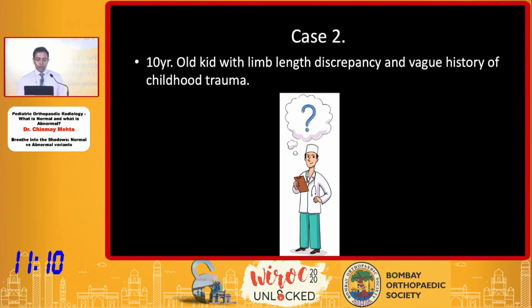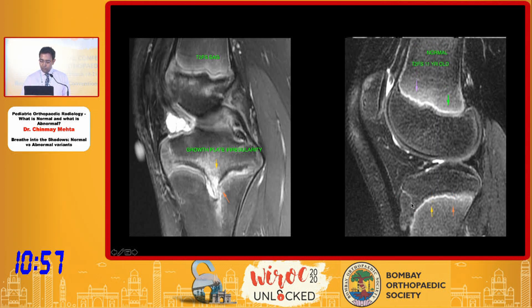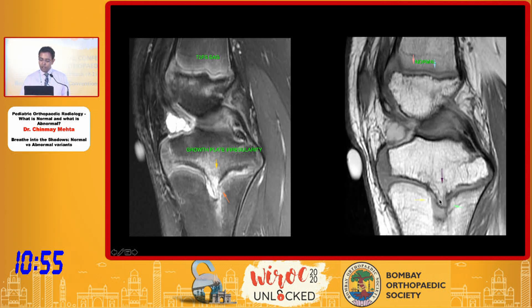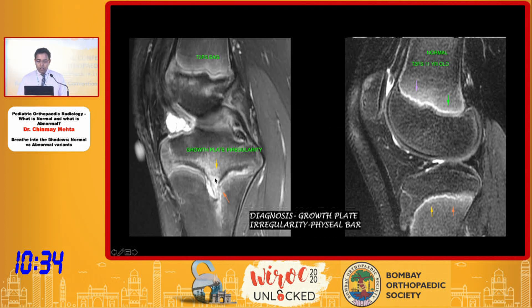Let's look at the second case: a 10-year-old kid with limb length discrepancy and a vague history of childhood trauma. When you look at this physis on a fluid-sensitive sequence, there is an abrupt interruption of the growth plate with a discrete physeal bar closing it. That's the typical physeal bar we see whenever there has been an old history of trauma or infection. The normal physis should have been contiguous.